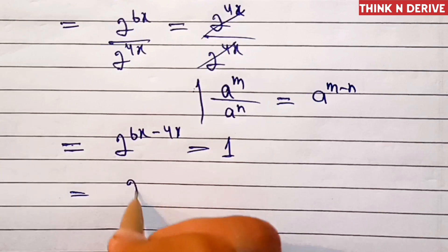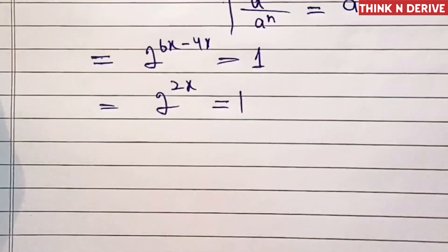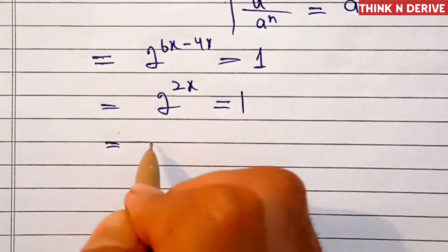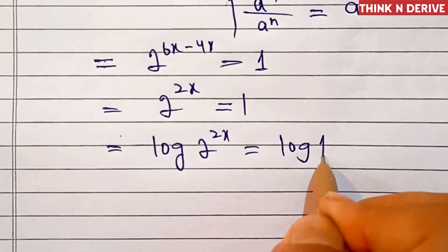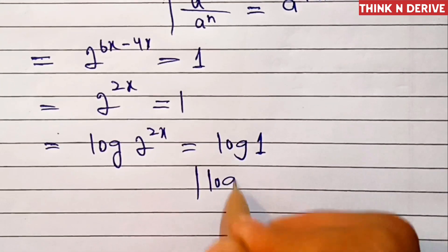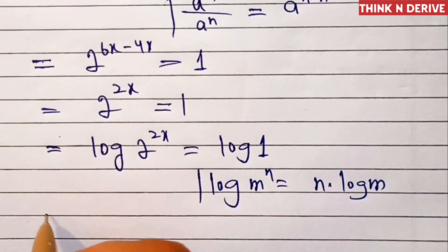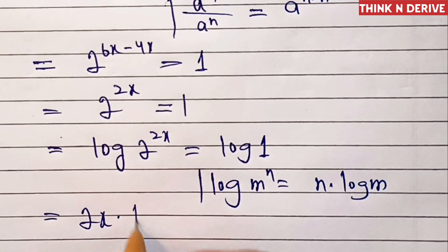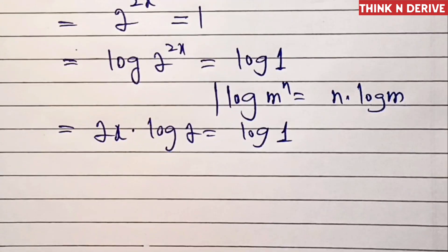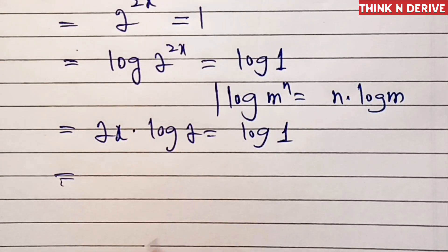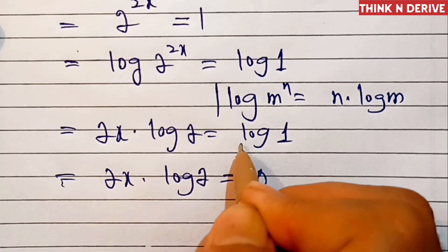So 6x minus 4x is 2x, giving us 2 power 2x equal to 1. Now we'll apply log on both sides: log of 2 power 2x equal to log of 1. We know log m power n is equal to n into log m. So this will become 2x into log 2 equal to log 1.